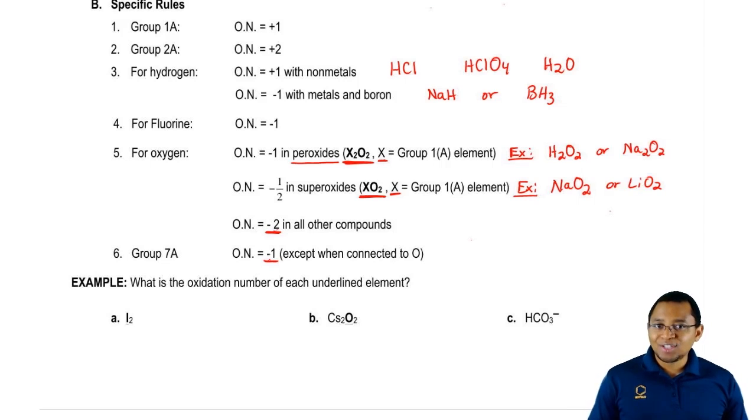For the first one, we have I2. So remember, which rule should we look at? Well, here we have a non-metal, an element connected to a copy of itself with no charge.